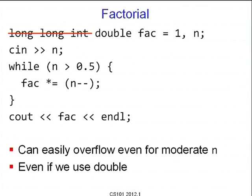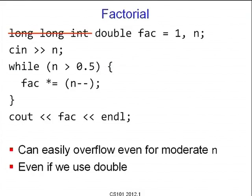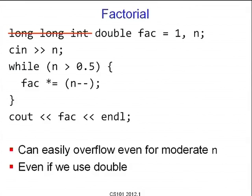The next example is factorial. Suppose I want to calculate the factorial of number n: initialize long long int 'fact' to 1, read in n, and then while n is greater than 0, multiply factorial by n, then decrement n within the loop. Until n goes down to 1 you keep multiplying by n. This avoids declaring an intermediate variable like i and clocking it up — you can do it either way, there will be no difference. However, this can easily overflow even for moderate n, even if you use double.